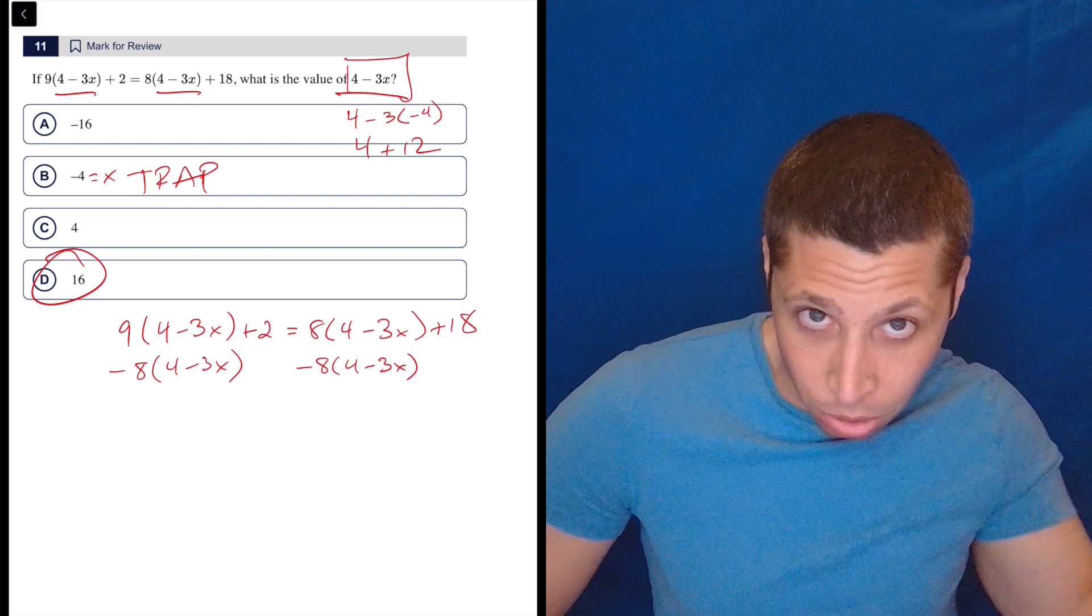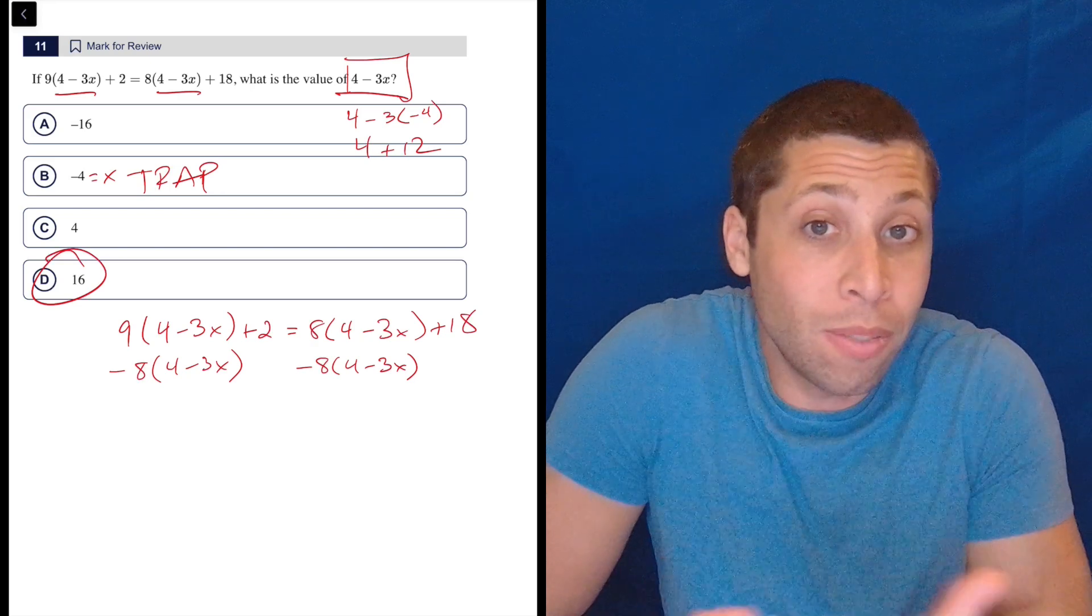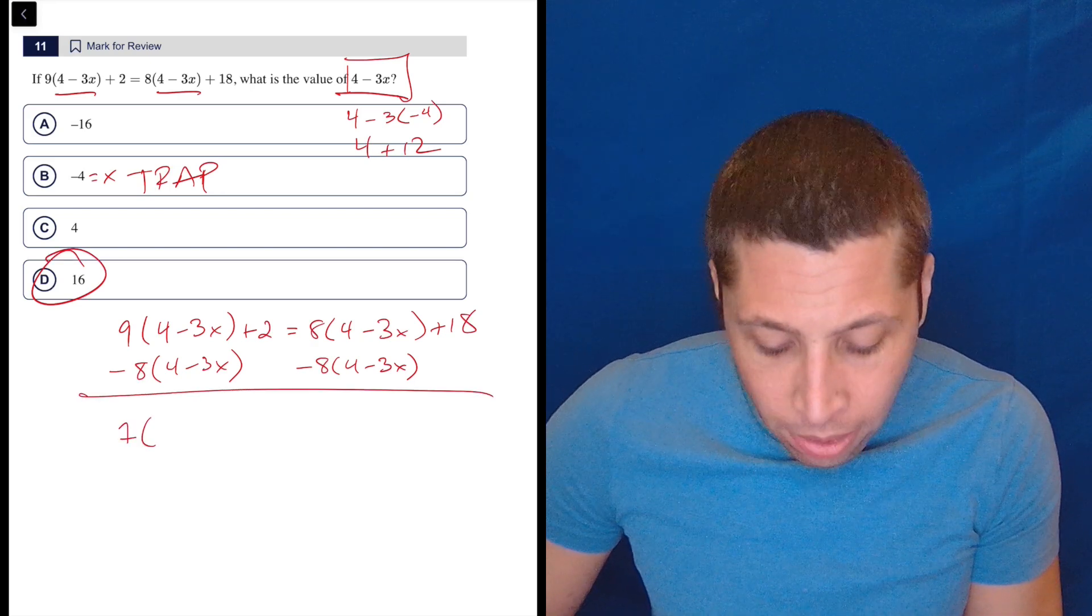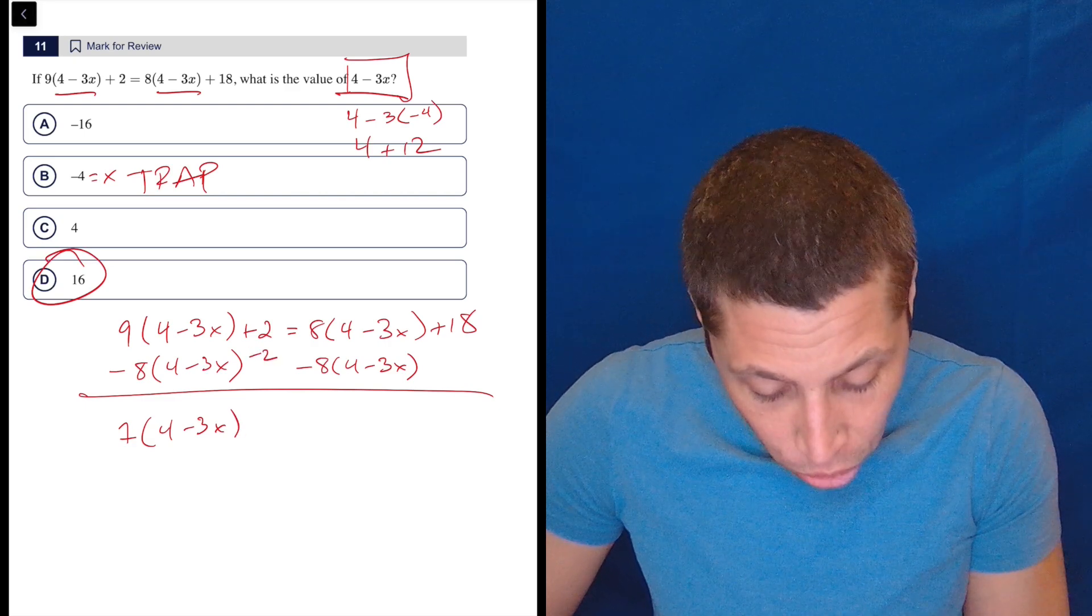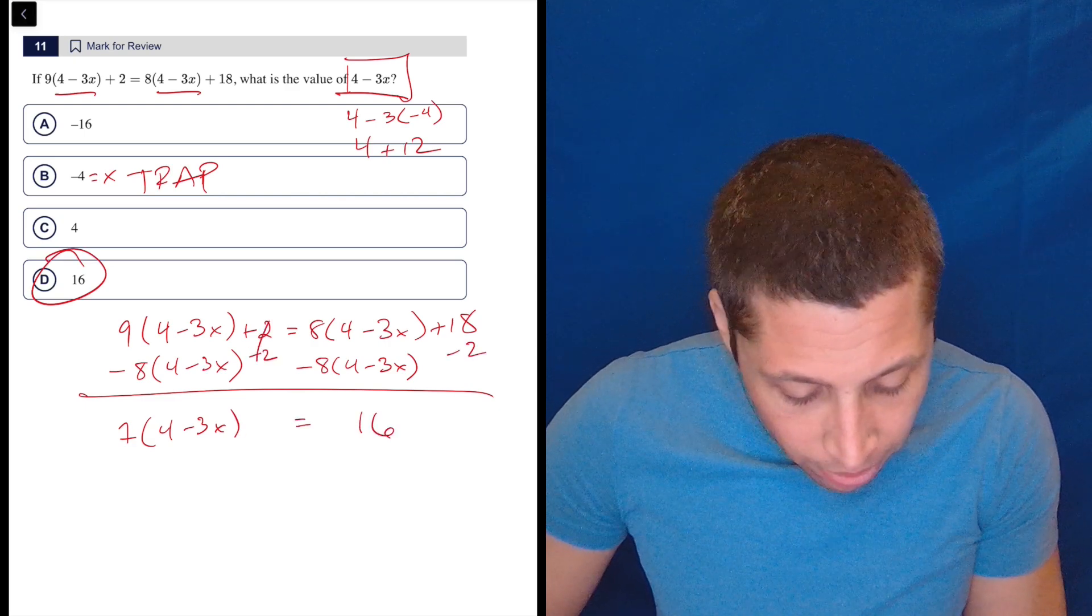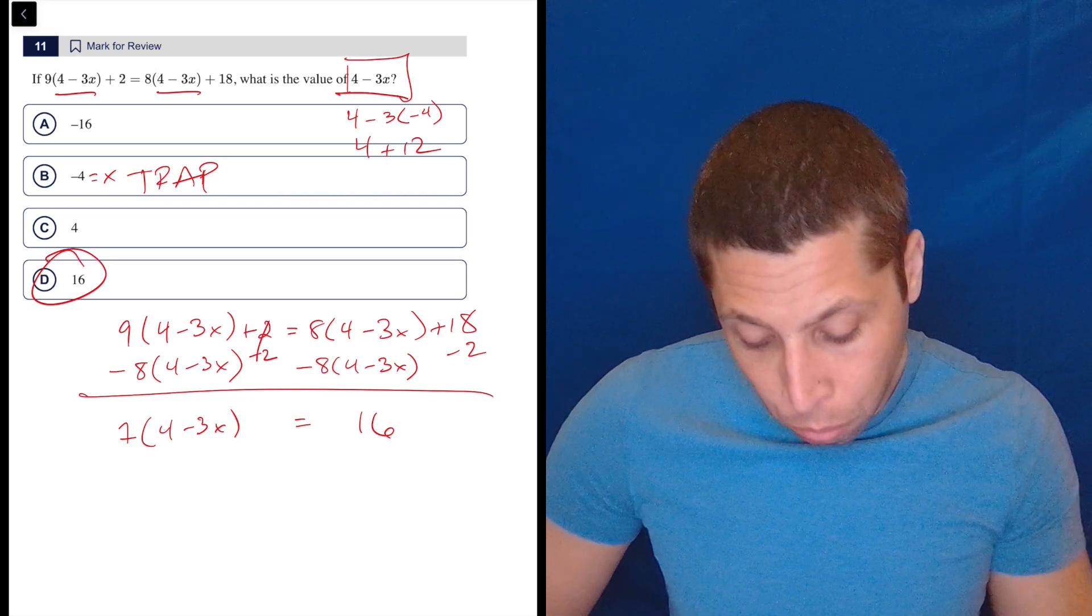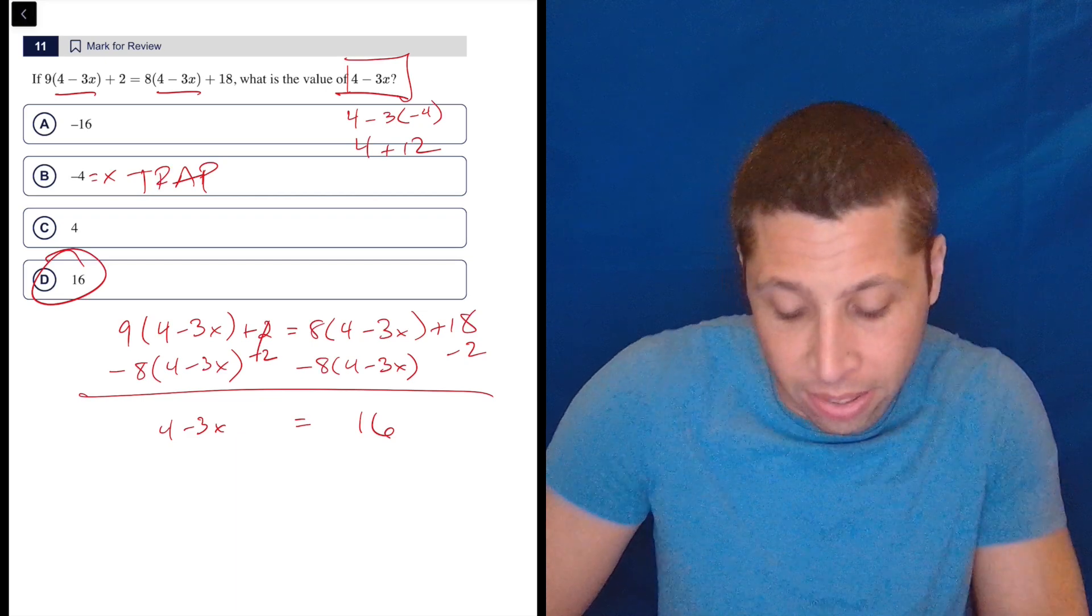So nine four minus three X's and eight four minus three X's are kind of the same thing. We can combine them. And so we would get one four minus three X. Now let's finish the job though. Let's get this two out of there and let's put that over there. And there it is. Now I have some extra pieces because one times four minus three X is just four minus three X. And that's what we wanted. And 16 is the answer.